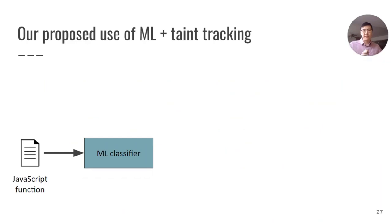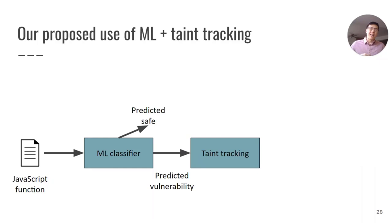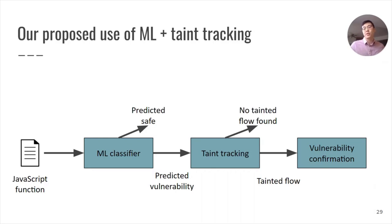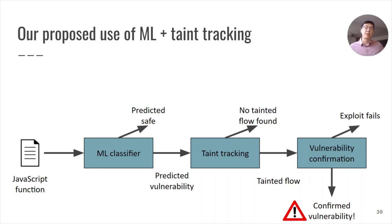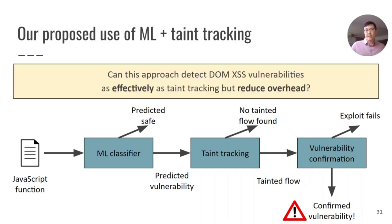We propose this in the following way. First, a JavaScript function is passed to a machine learning classifier, which makes a prediction as to whether or not this function is safe or not. Ideally, a large proportion of the predicted safe functions are indeed safe, as these functions would no longer be classified by taint tracking. All other functions are passed to taint tracking, which then determines whether a tainted flow exists or not. For flows that are tainted, they go through the proof-of-concept exploit, and whether this exploit succeeds or not confirms the presence of a DOMXSS vulnerability. Our question ultimately is: can this approach, which combines machine learning with taint tracking, help detect DOMXSS vulnerabilities as effectively as the original taint tracking solution, but reduce overhead while doing so?